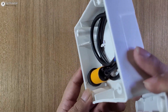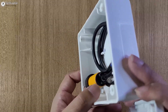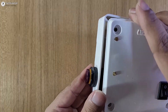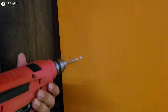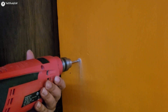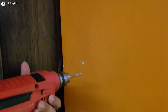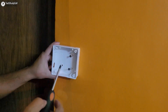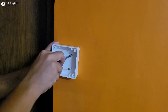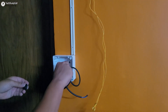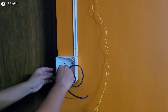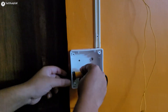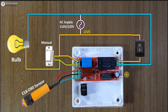Here is our sensor, and of course we can adjust the range using this screw. Now let me check that everything is okay. Let me drill some holes so I can fit this box on the wall, then fit the box on the wall. Now I will place the sensor again and connect the PCB sensors as per the circuit.